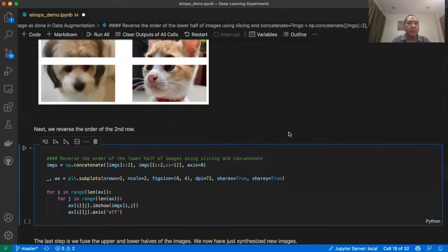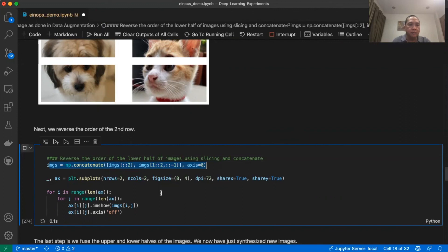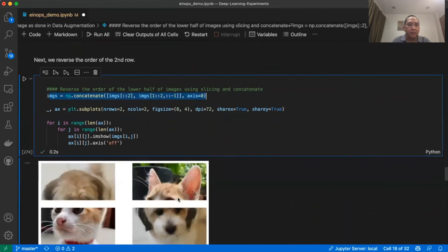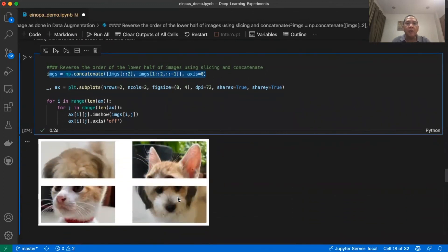Next, we will reverse the order of the second row. This is done by using slicing and numpy concatenate. Let's execute the code. This is the result when the lower half is reversed.